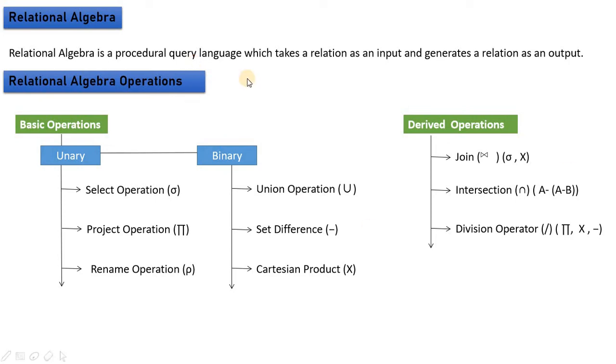What happens is it takes a relation as an input - we take a table as an input - and the output is also a table. Meanwhile some operations are performed. You have a table, operations are performed, and a new table is generated as output.